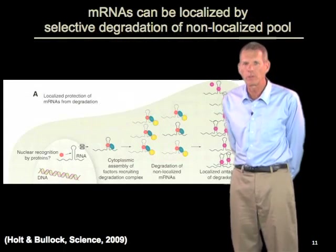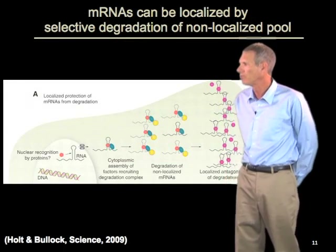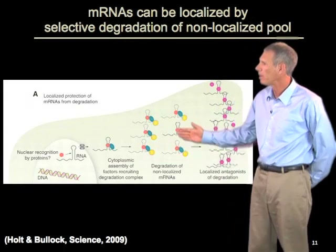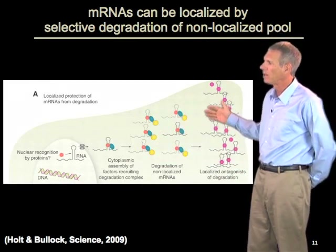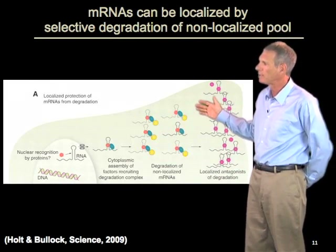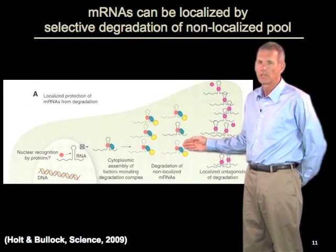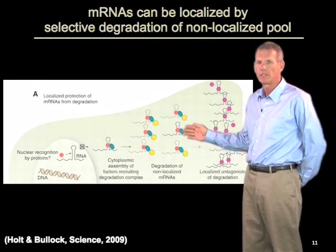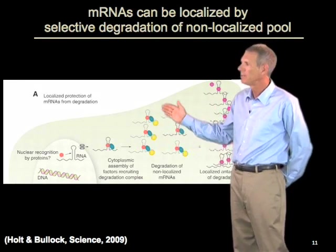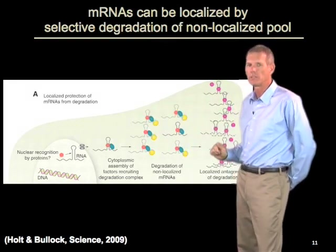mRNAs can also be localized by selective degradation of the non-localized pool. For example, mRNAs can start out distributed throughout the cell, but RNAs which are not in a specific location can be preferentially degraded. One example of this is the nanos mRNA, which is localized to the posterior tip of Drosophila embryos — it is distributed throughout the cell, but then degraded in the regions that are not at the posterior pole.